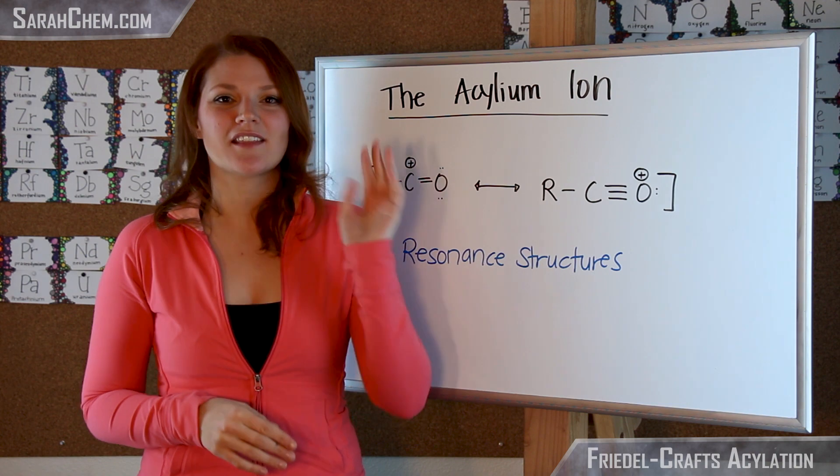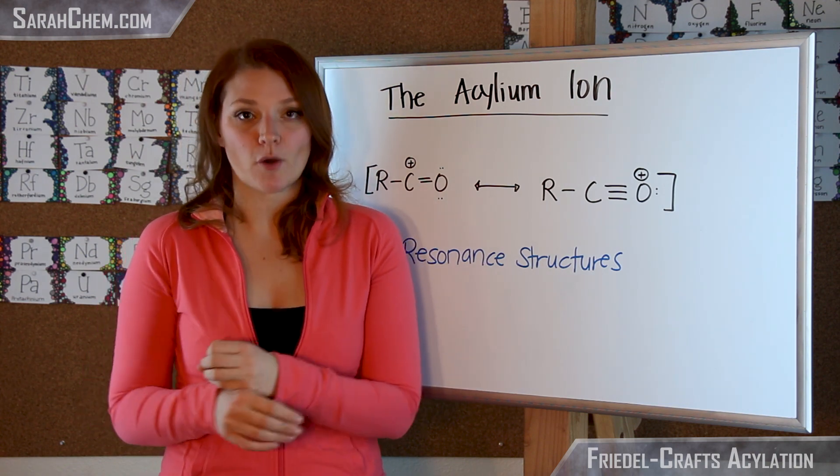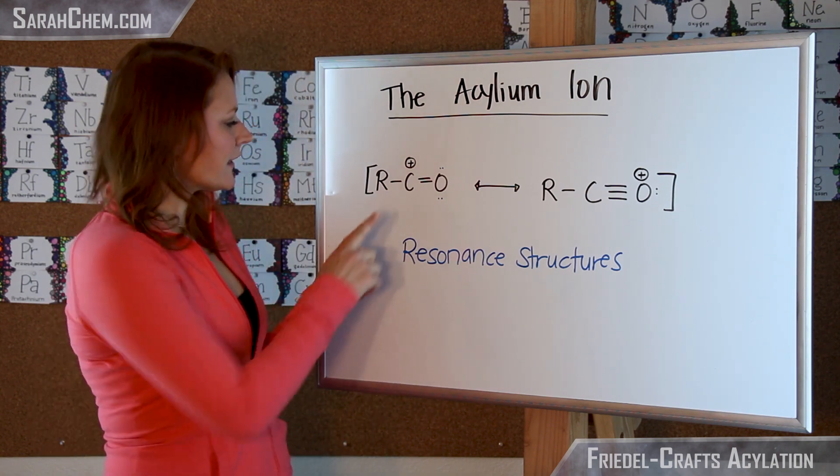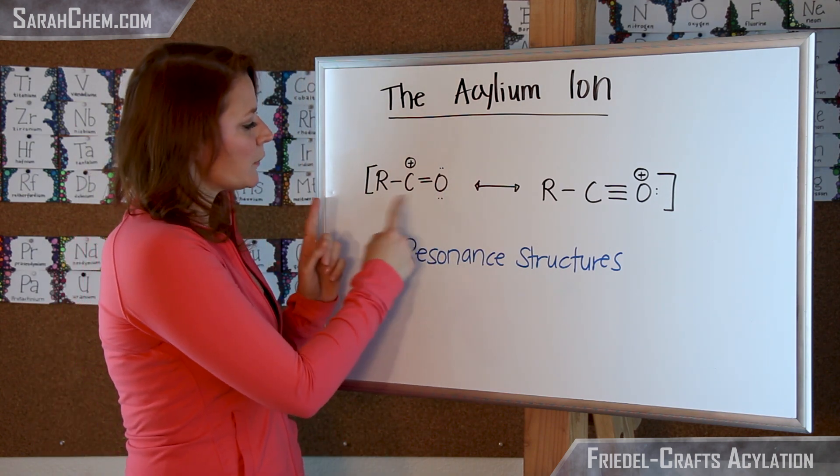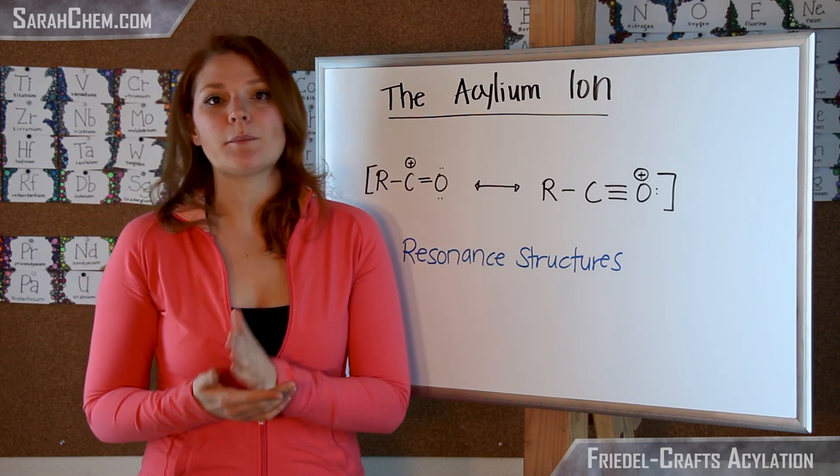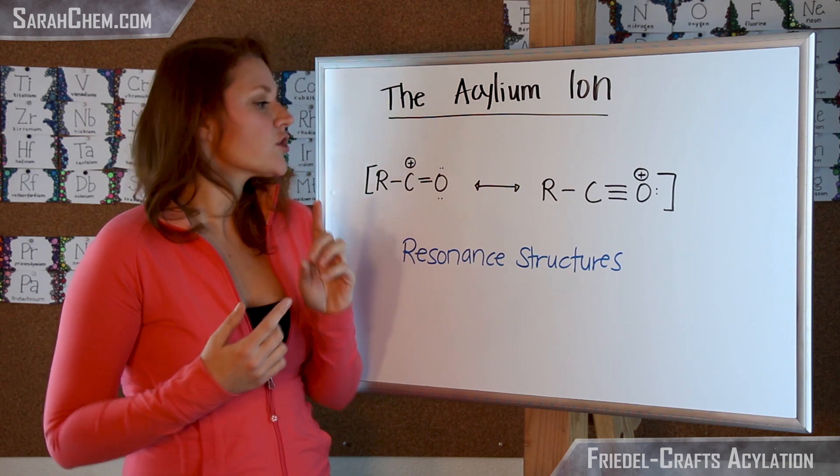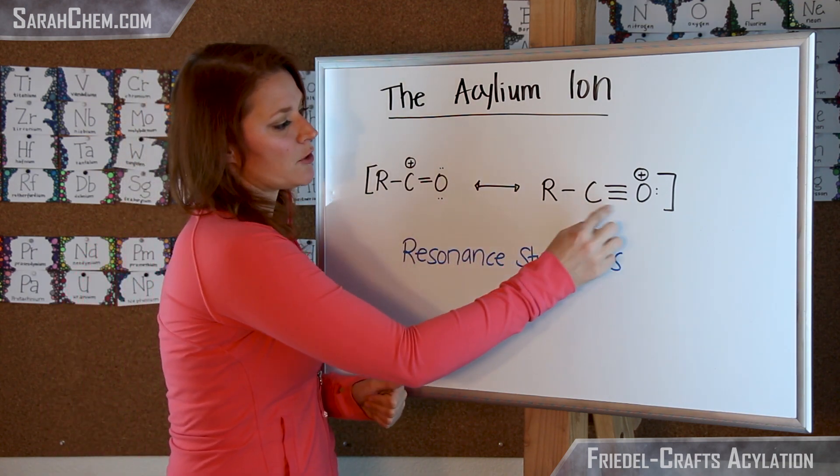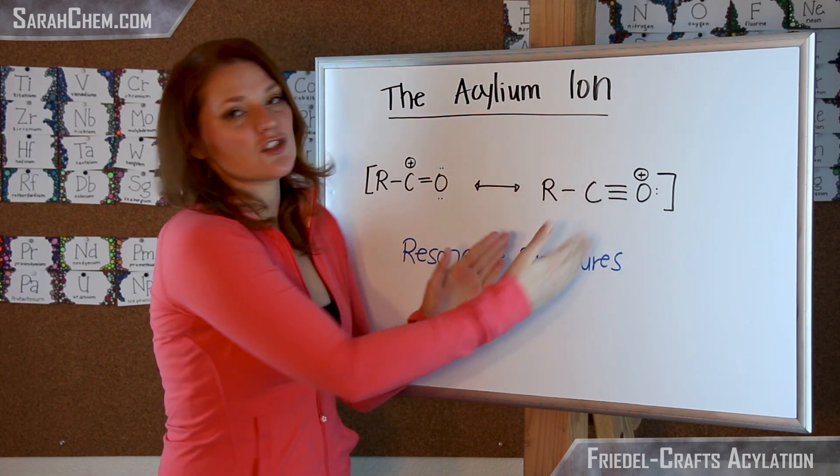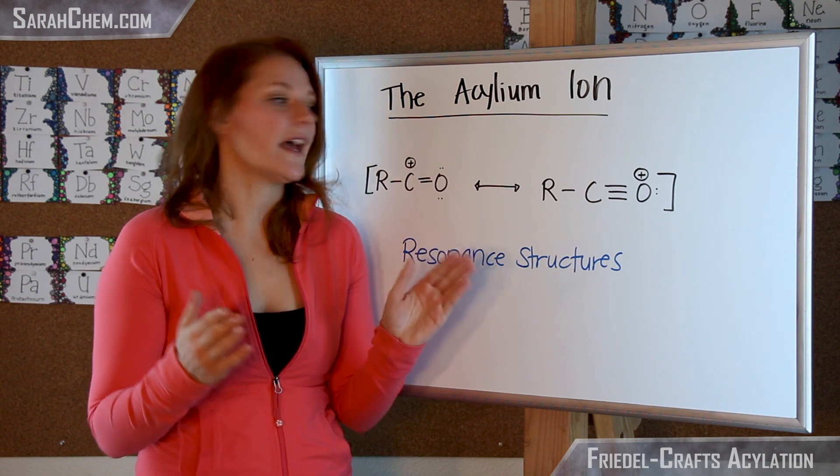So now before we continue on to the acylation step, I just wanted to mention one thing about the electrophile we formed. So as I left it, the acylium ion that we formed is going to be this structure right here. Now this one here though leaves a carbon without a complete octet, meaning it's not the best resonance structure you could draw. So what you could have is that this lone pair here comes down and it would form a triple bond between the carbon and the oxygen. So this structure is actually a better structure in terms of stability because everything has an octet.